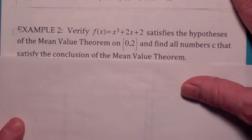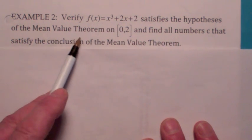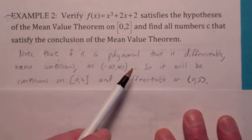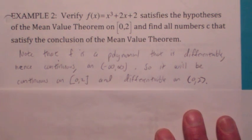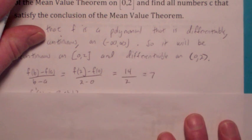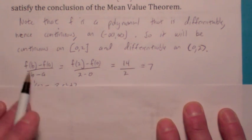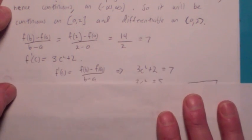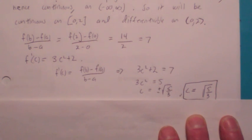Here's an example where we verify what the Mean Value Theorem says. First, verify the function satisfies the hypotheses on [0, 2]. Since it's a polynomial, it's differentiable and continuous on the entire real line, so it's certainly continuous on [0, 2] and differentiable on (0, 2). Second, find the value c where f'(c) equals the slope of the secant line from 0 to 2: that's f(2) − f(0) over 2 − 0 = 14/2 = 7. Setting f'(c) = 3c² + 2 = 7 and solving gives c = ±√(5/3); only the positive root lies in (0, 2), so c = √(5/3) satisfies the MVT.